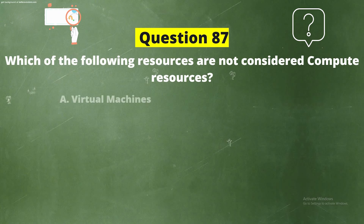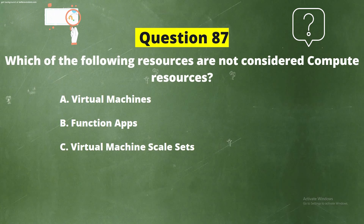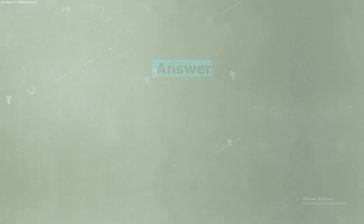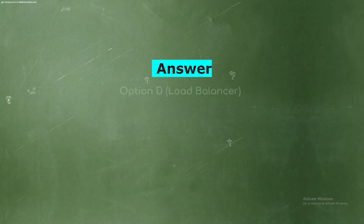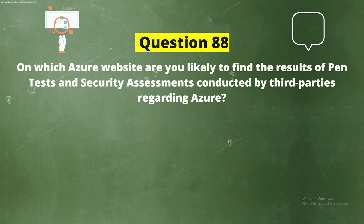Question 87: Which of the following resources are not considered compute resources? Options: A) Virtual Machines, B) Function Apps, C) Virtual Machine Scale Sets, D) Load Balancer, E) Azure Batch. The correct answer is option D, Load Balancer. A load balancer is a networking product and does not execute your code.